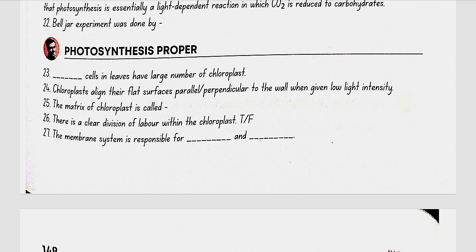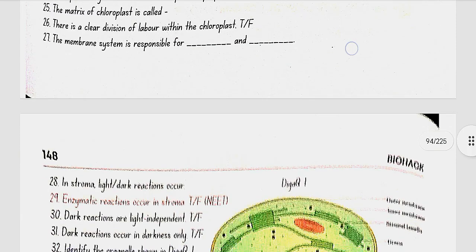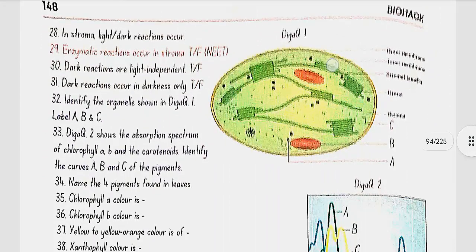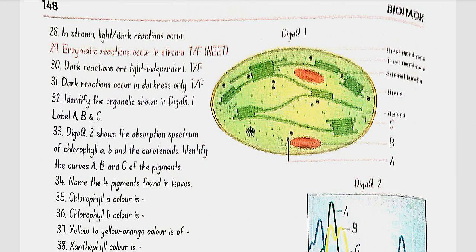There is a clear division of labour within the chloroplast. The membrane system is responsible for trapping light energy and the synthesis of ATP and NADPH. In the stroma, dark reactions (enzymatic reactions) occur.